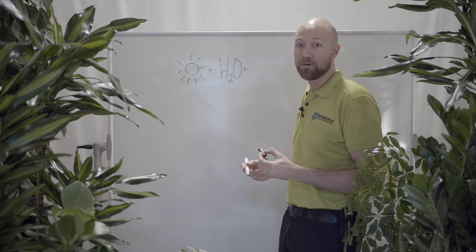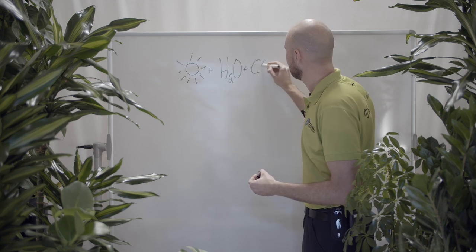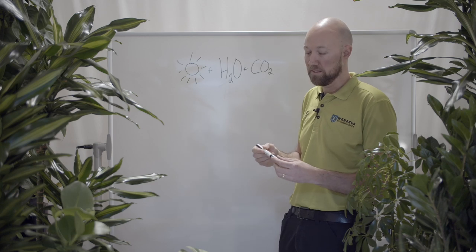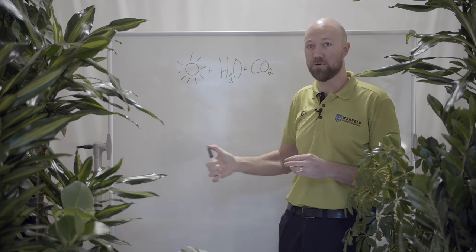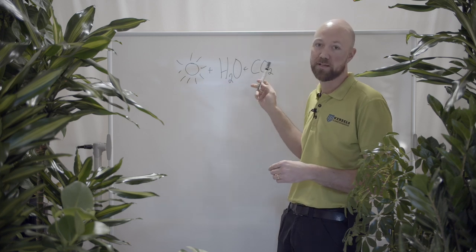And the third component in the photosynthesis is carbon dioxide. So to produce the food for the plant, it needs light, water, and carbon dioxide.